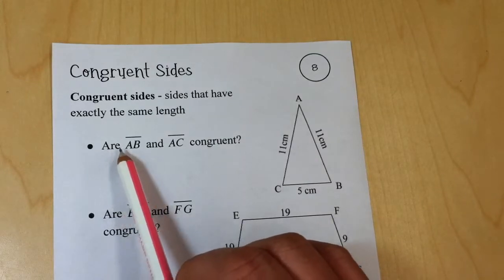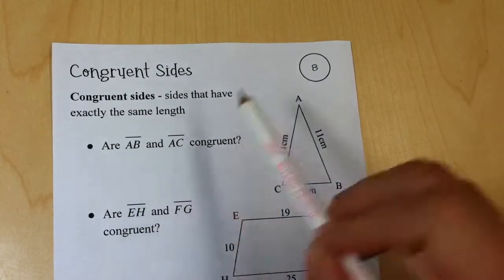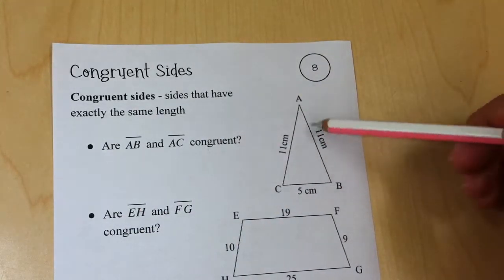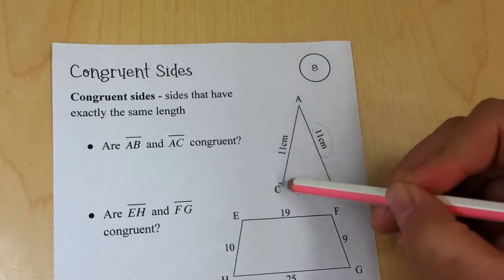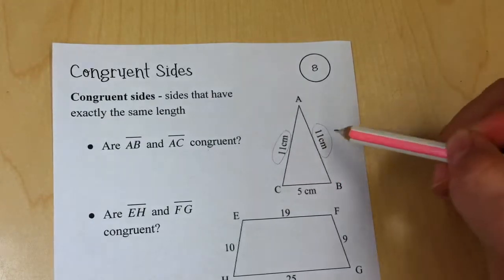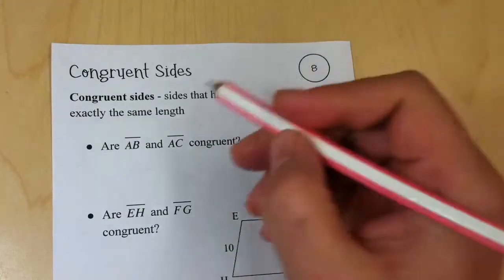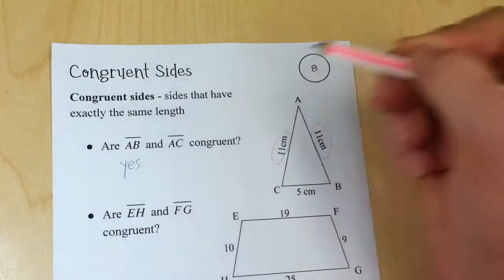So we ask, are AB and AC congruent? I check AB, this side here, with 11 centimeters, and AC, also 11 centimeters. They are equal measure, so yes, they are congruent.